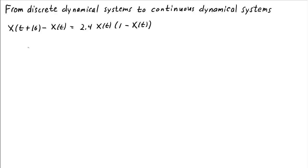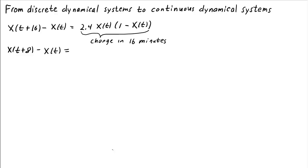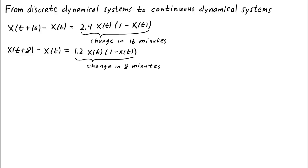This change in notation helps us see what we could do if we wanted a different model for bacteria growth in different intervals. For example, let's say we wanted to look at 8-minute intervals. The change over 8 minutes is x(t+8) minus x(t). If the change over 16 minutes is 2.4x(1 minus x), then it seems reasonable that the change in 8 minutes might be half that amount — so it's not completely crazy to suggest the change in 8 minutes should be 1.2 times x times (1 minus x). Now these are not equivalent models and might have different behavior, but they're related in the sense that we divided the time step in half and then divided the amount of change in half.